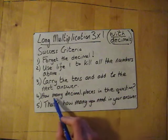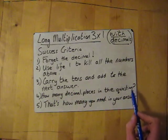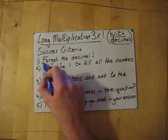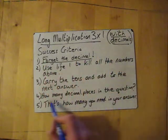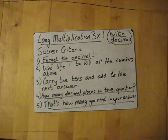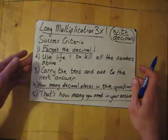Then you ask yourself two questions at the very end: how many decimal places are in the question? That's how many you need in your answer. This is the most important one: just forget the decimal, and then how many decimal places in the question, that's how many are in your answer. Let's do a couple of examples.